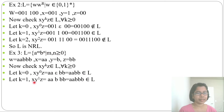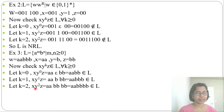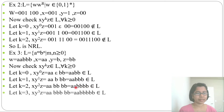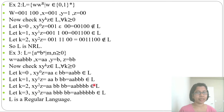For k = 1: x·y^1·z = aa·b·bb = aabbb, which belongs to L. For k = 2: aa·bb·bb = aa bbbb — 2 a's followed by 4 b's — also belongs to L. For k = 3: aa·bbb·bb = aabbbbb — 2 a's followed by 5 b's — also belongs to L. So for all k values the string belongs to L, confirming it is a regular language.